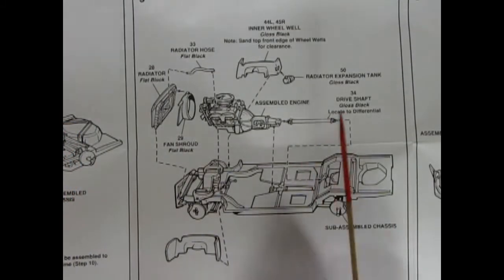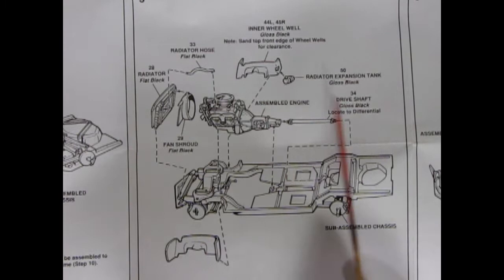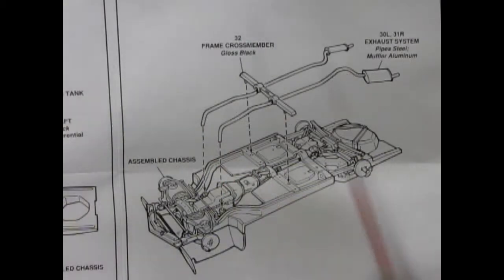And here we have stage 5 which we now get to see the engine getting in on the chassis. So there we've got our completed engine block with the drive shaft locate to your differential. Then our fan shroud going on to the end of the radiator here. And then we have our upper radiator hose. And then we've got our inner wheel wells. And here's the radiator expansion tank which glues on the side. And there's your other wheel well.